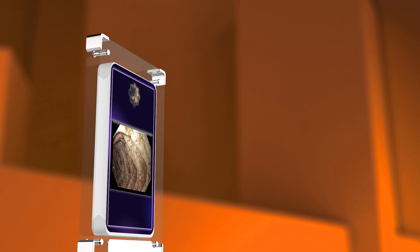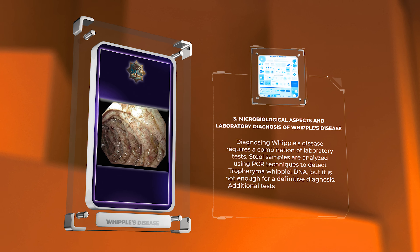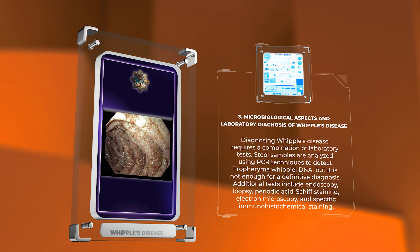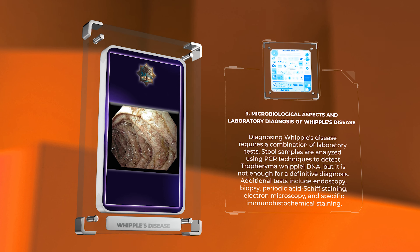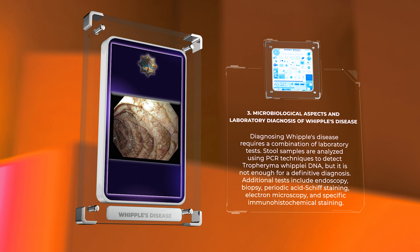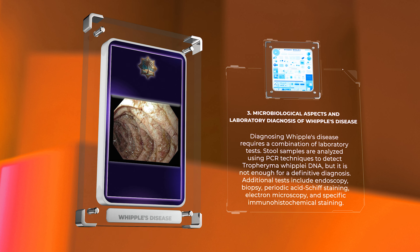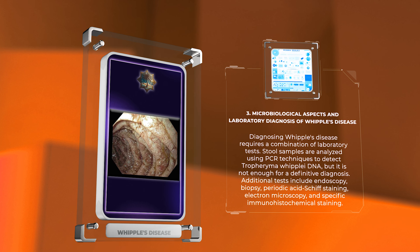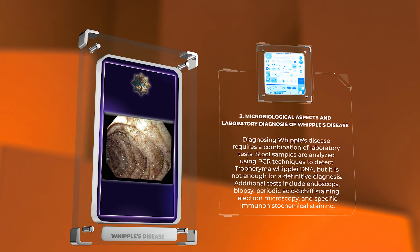Diagnosing Whipple's disease requires a combination of laboratory tests. Stool samples are analyzed using PCR techniques to detect Tropheryma whipplei DNA, but this is not enough for a definitive diagnosis. Additional tests include endoscopy, biopsy, periodic acid-Schiff staining, electron microscopy, and specific immunohistochemical staining.